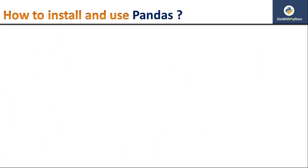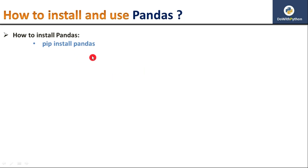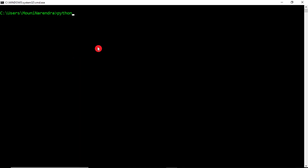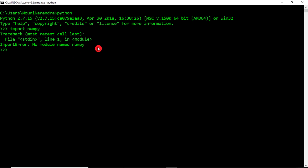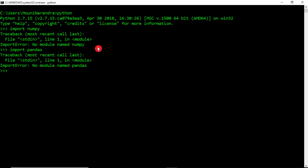Pandas is a third-party library, so you need to install it before using it. Using the pip command, you can install any third-party module. Simply run 'pip install pandas'. If you have Anaconda distribution, you can also use 'conda install pandas'. Here I'm using default Python so I'll use the pip command. Let me open my command line — I'm going to my Python shell and trying to import NumPy and Pandas, but neither is available yet.